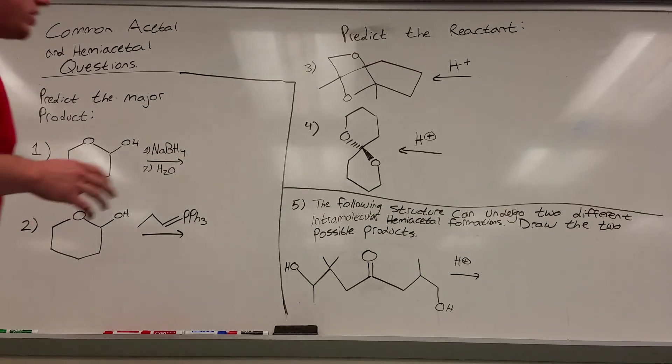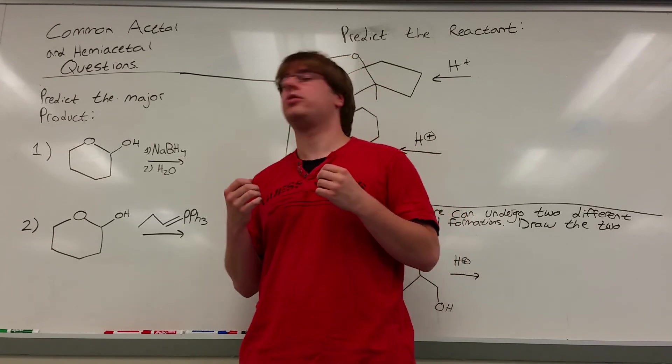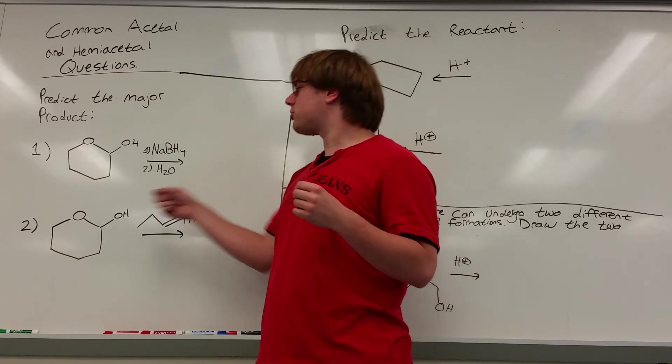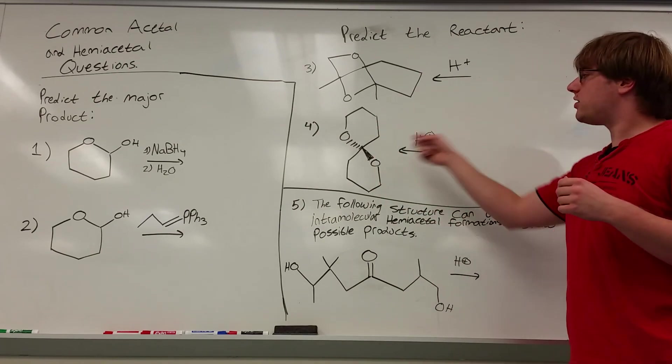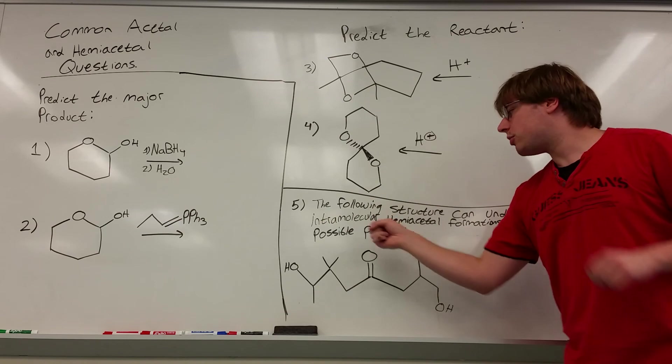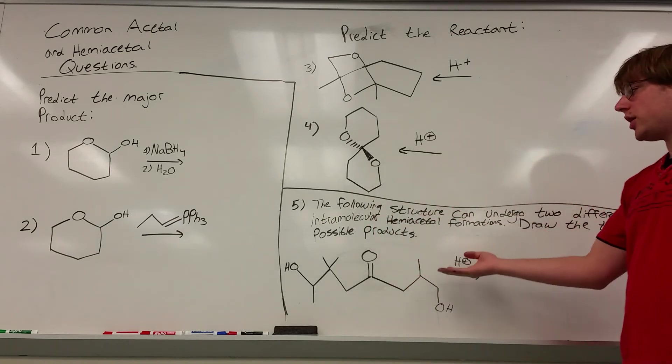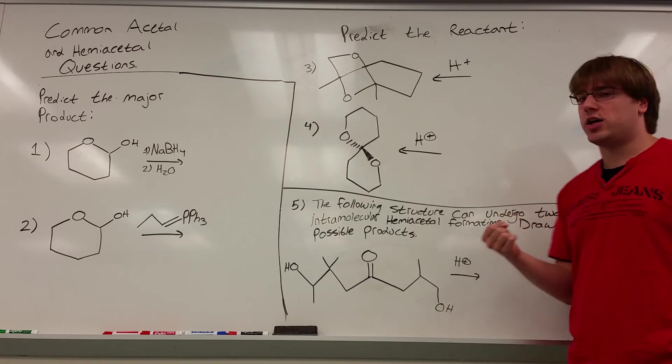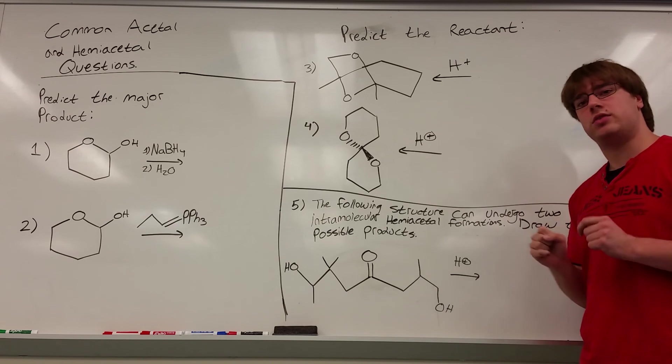Here are some common questions I see asked on exams that involve hemiacetals and acetals. For problems 1 and 2, predict the major product of these two reactions. For 3 and 4, predict the reactant of these two products when treated with H+. And number 5, the following structure can undergo two different intramolecular hemiacetal formations. Draw the two possible products. So if you want to try these on your own, go ahead and pause the video.